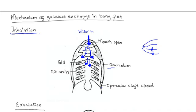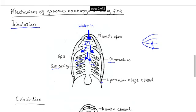After water has entered the mouth cavity, the mouth is closed and the floor of the mouth begins to rise. This rising of the floor of the mouth increases the pressure, and the rising pressure forces water from the mouth cavity into the pharynx where the gills are located — known as the gill cavity or gill chamber. So as the floor of the mouth is raised, water is pushed into the gill chambers and flows over the gills, where gases exchange takes place.